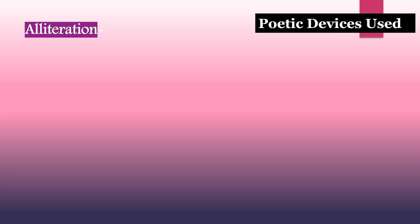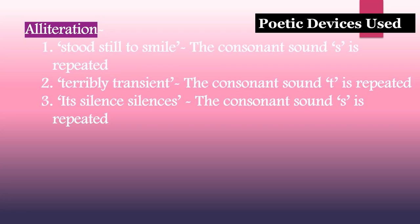Now let's look at the figures of speech used in this poem. Starting with alliteration — the use of the same consonant sound at the beginning of each stressed syllable in a line of verse. In this poem, the following are cases of alliteration: 'stood still to smile' — the consonant sound S is repeated; 'terribly transient' — the consonant sound T is repeated; 'its silence silences' — the consonant sound S is repeated.